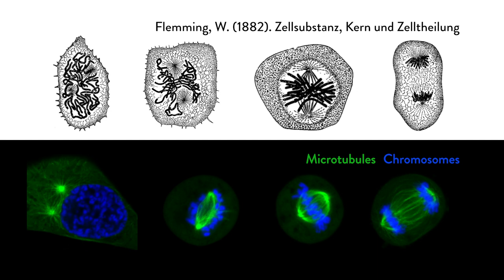These are extremely dynamic structures that continuously alternate between phases of rapid growth and shrinkage, and there are thousands of them in the spindle, very densely packed. They gain access to chromosomes in early mitosis and then seem to reorganize themselves around chromosomes, sorting themselves into this bipolar structure.